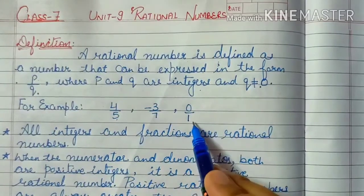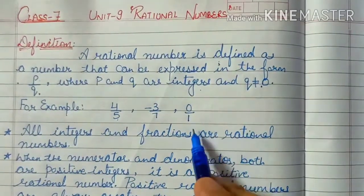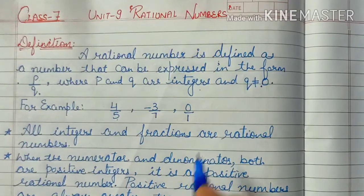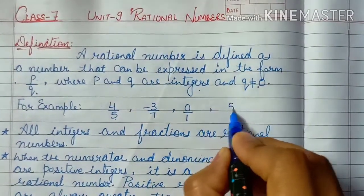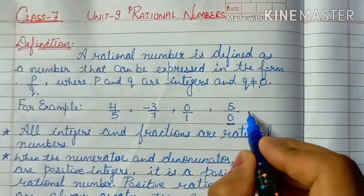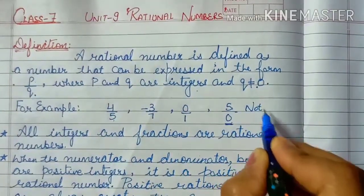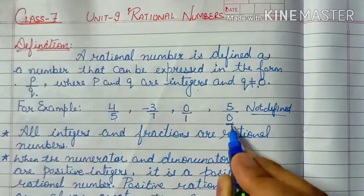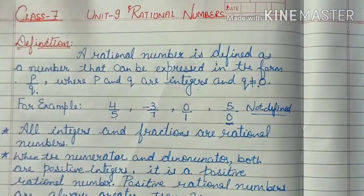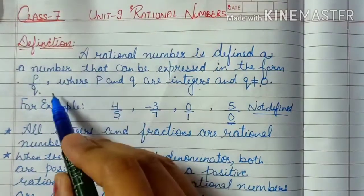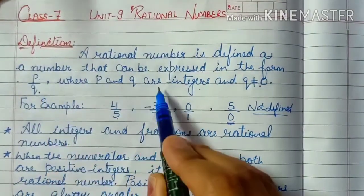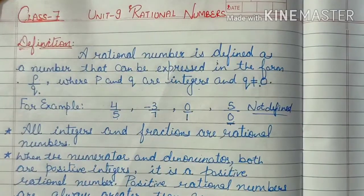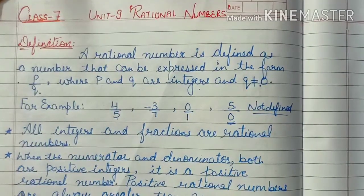0 is also an integer and 1 is also an integer, so 0 upon 1 is also a rational number. But if we have the number 5 upon 0, it will be not defined — it does not exist. Therefore we cannot take 0 in the denominator. So a rational number in the form P upon Q, where P and Q are integers and Q is not 0, is known as a rational number — similar to a fraction.